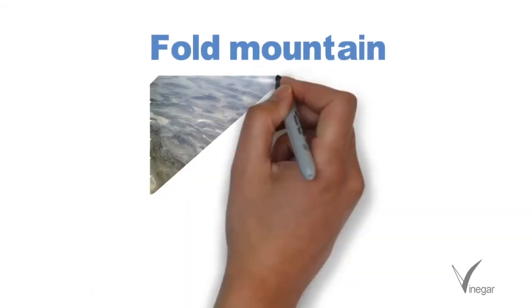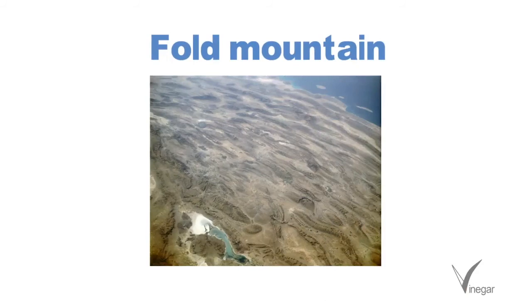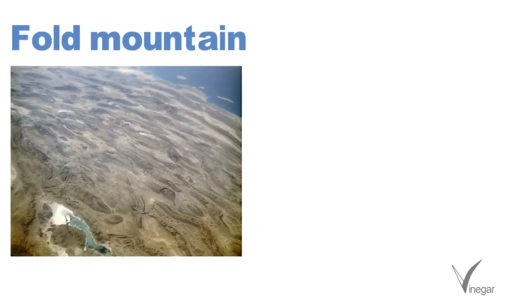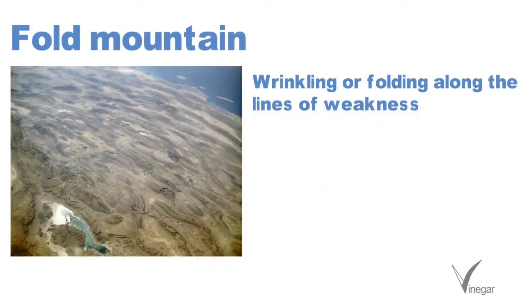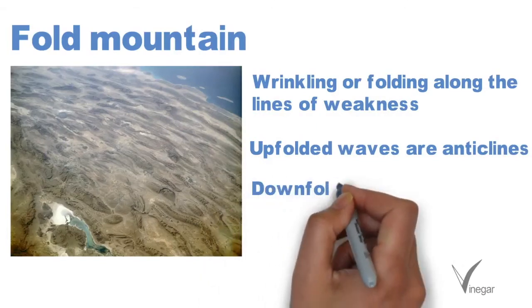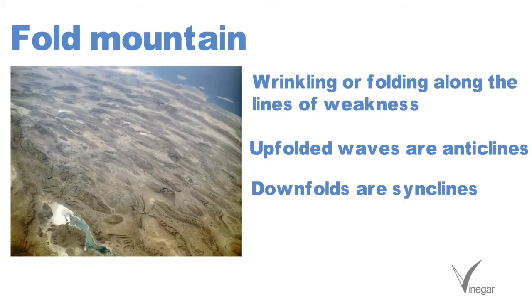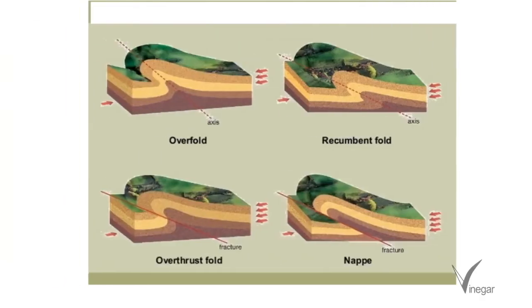Now let's talk about types of mountains, starting with fold mountains. These are the most common type of mountains. They are formed by large-scale Earth movement when stresses are produced in the Earth's crust, causing rocks to bear compressive forces. This produces wrinkling or folding along lines of weakness. Places where up-folded waves are formed are known as anticlines, and wherever down-folds are produced, those are known as synclines. These up and down folds are similar to wrinkles formed on a tablecloth. Examples are the Himalayas, Rockies, Andes, and Alps.